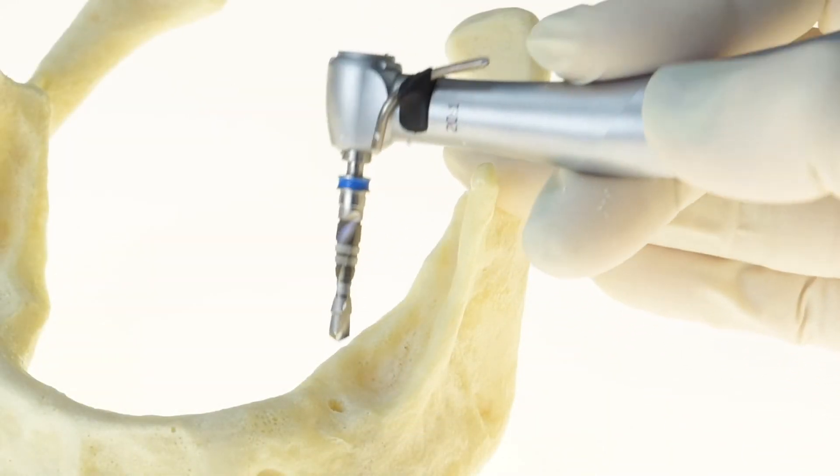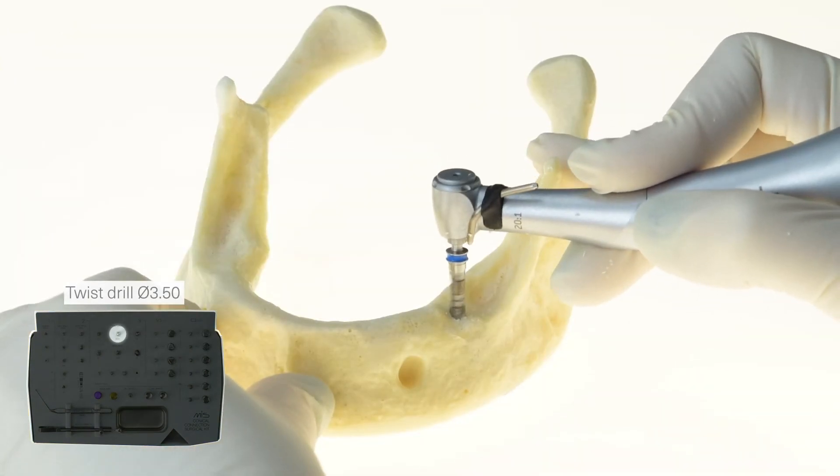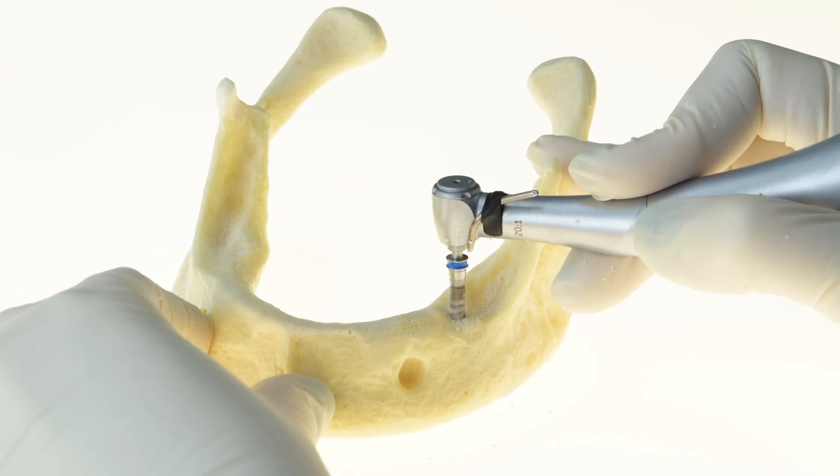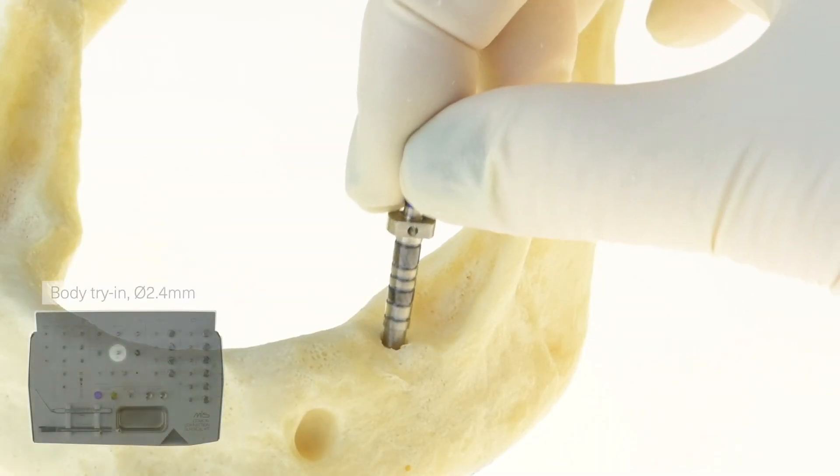A second step drill is used to widen the osteotomy. Once again, we check our depth with the body try-in.